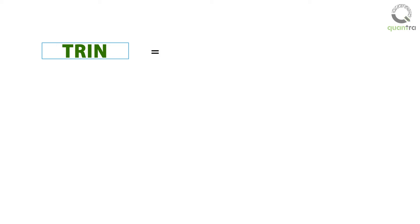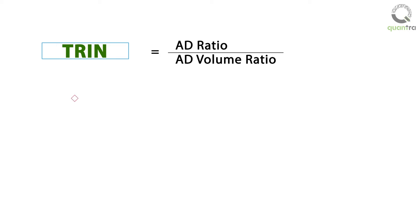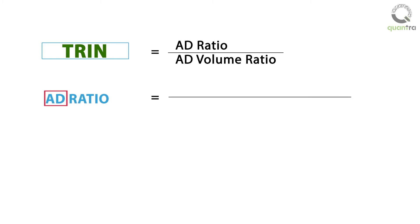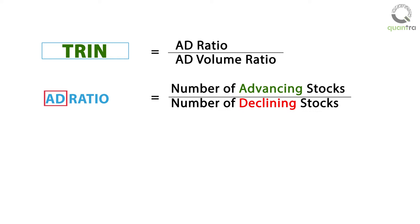TRIN is defined as the ratio of two ratios: the AD ratio divided by the AD volume ratio. The AD ratio is described as the number of advancing stocks divided by the number of declining stocks.